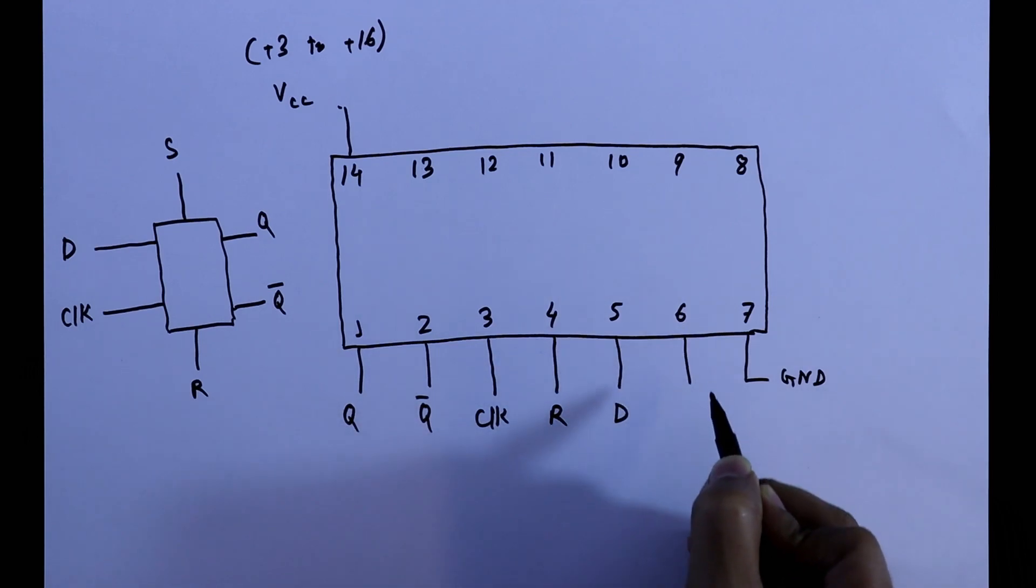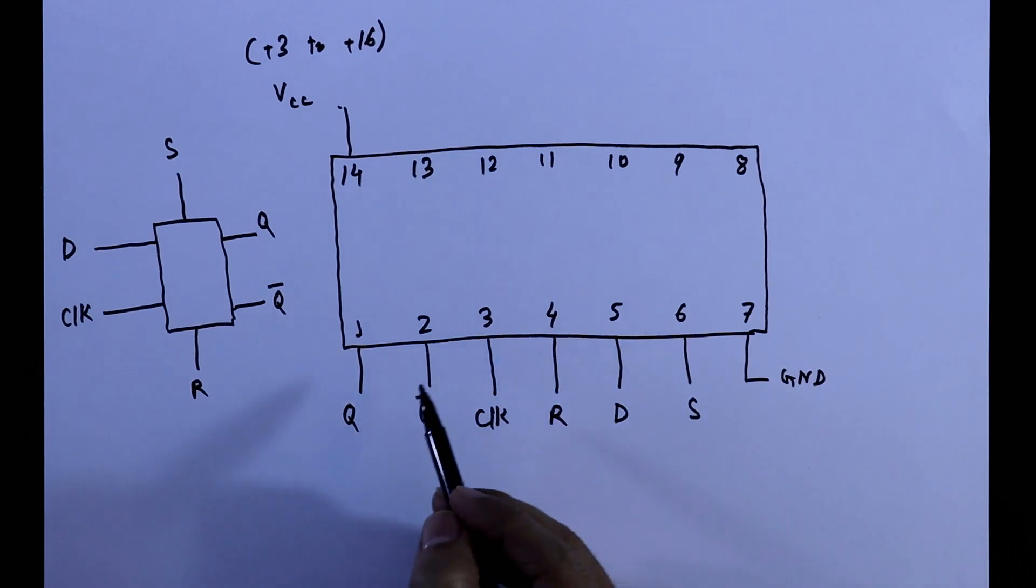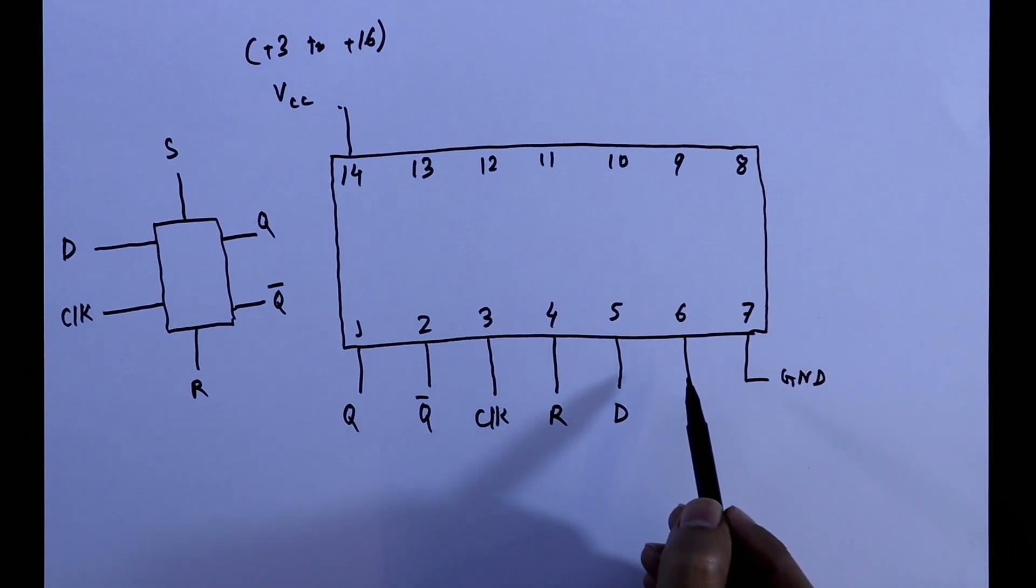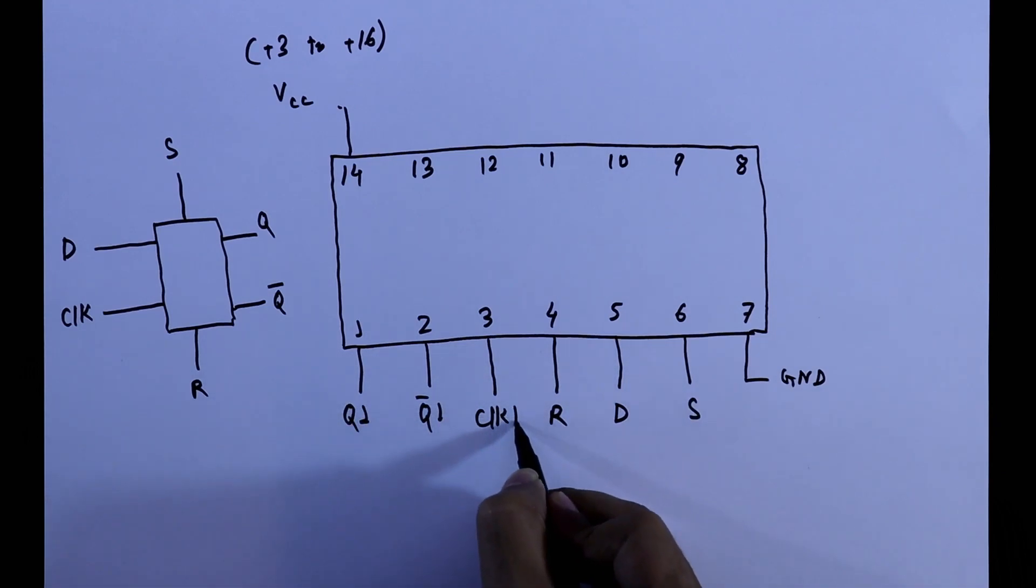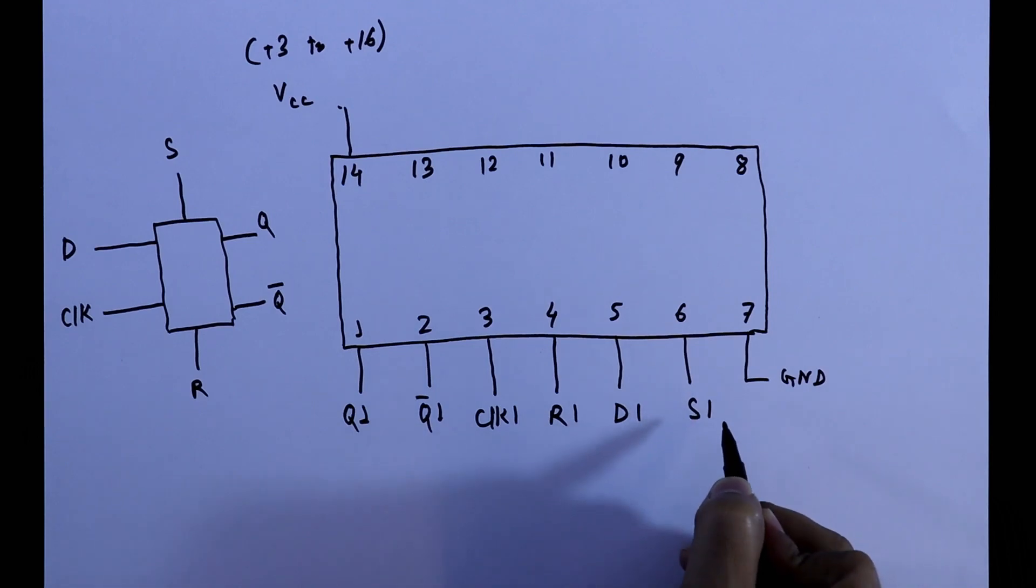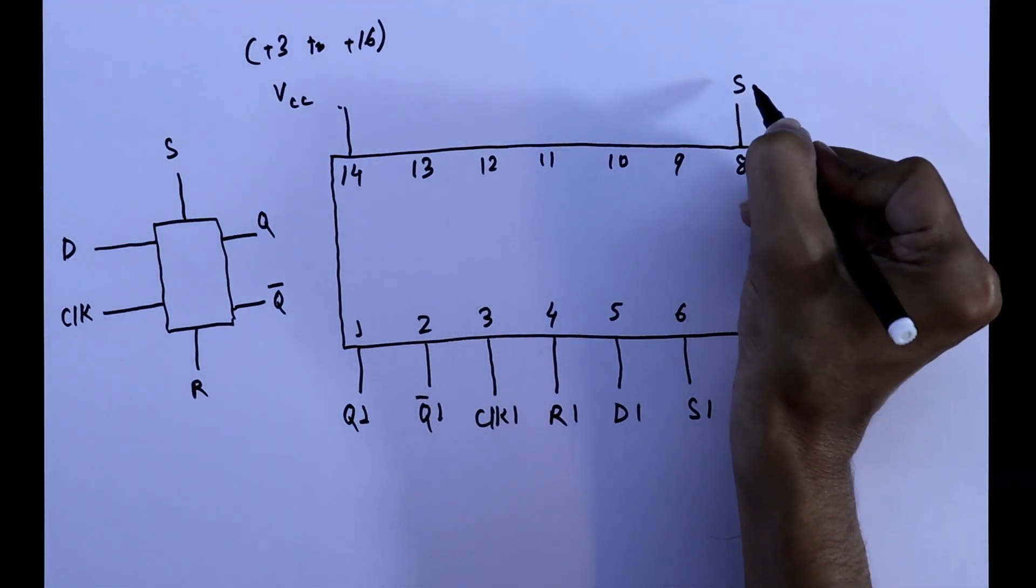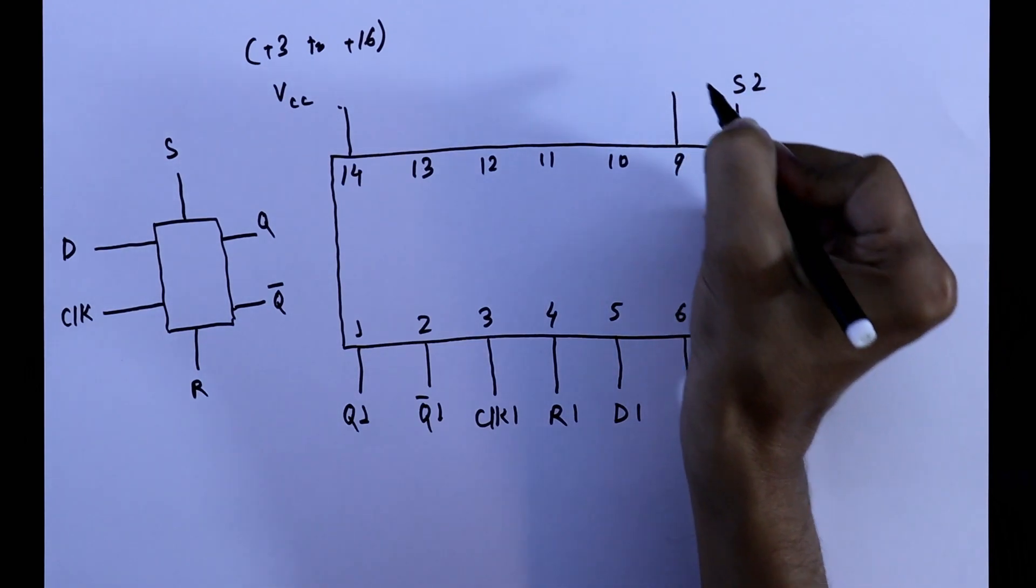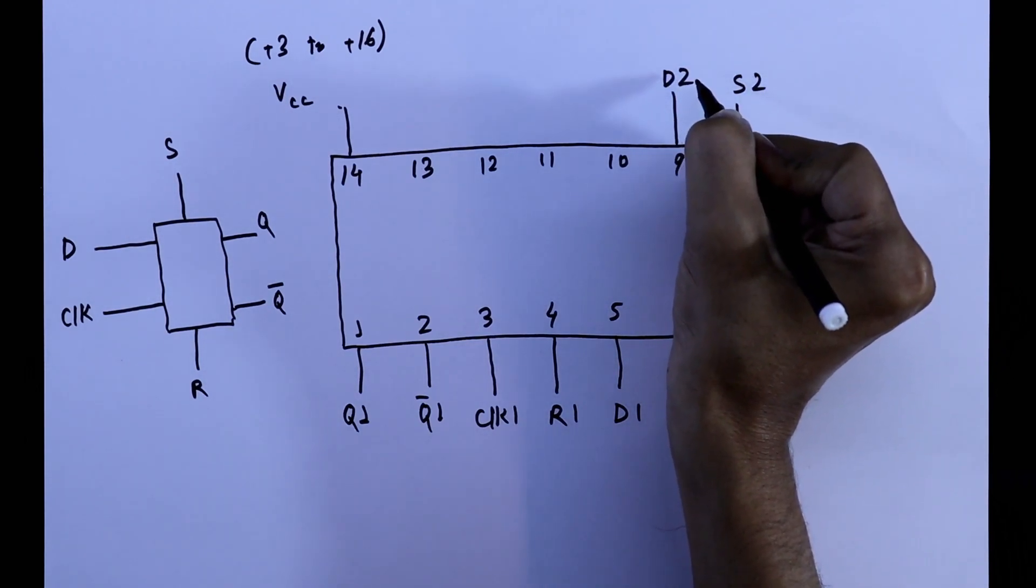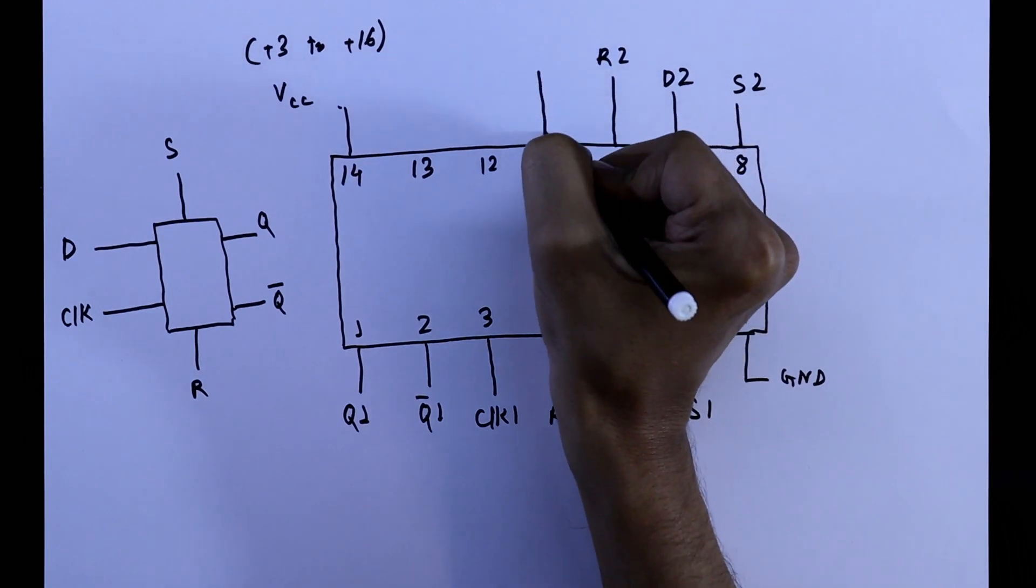Data and set. As it is for first flip flop, so we have to write 1, 1, 1, 1, 1. And for this flip flop, it is set 2, data 2, reset 2, clock, Q bar 2 and Q.